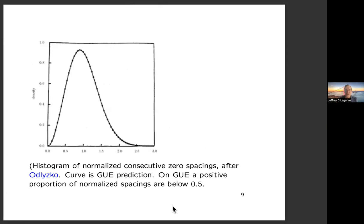The famous Odlyzko plot shows the normalized consecutive zero spacings histogram — this one for 10 to the 20th. The curve plotted through the points is the GUE prediction, giving great agreement. A positive proportion of the normalized spacings are below 0.5, which, according to the Conrey–Iwaniec theorem, would give an effective version if we could prove it.